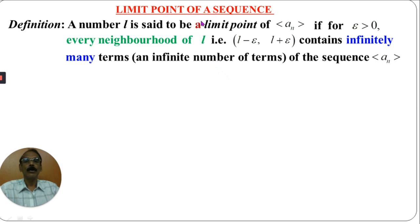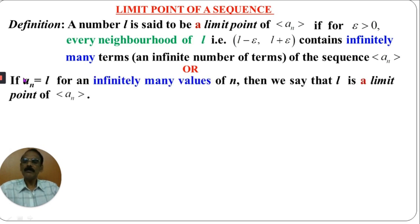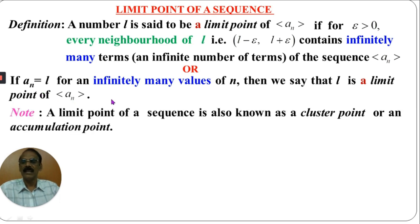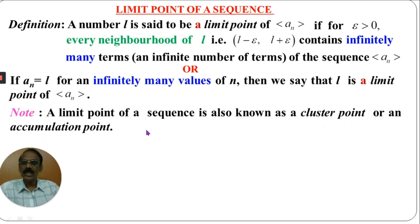This neighborhood contains an infinite number of terms of the sequence AN, and L is called a limit point. That means for a given sequence we may have more than one limit point. If AN equals L for infinitely many values of N, then L is a limit point of AN. A limit point of a sequence is also known as a cluster point or an accumulation point.